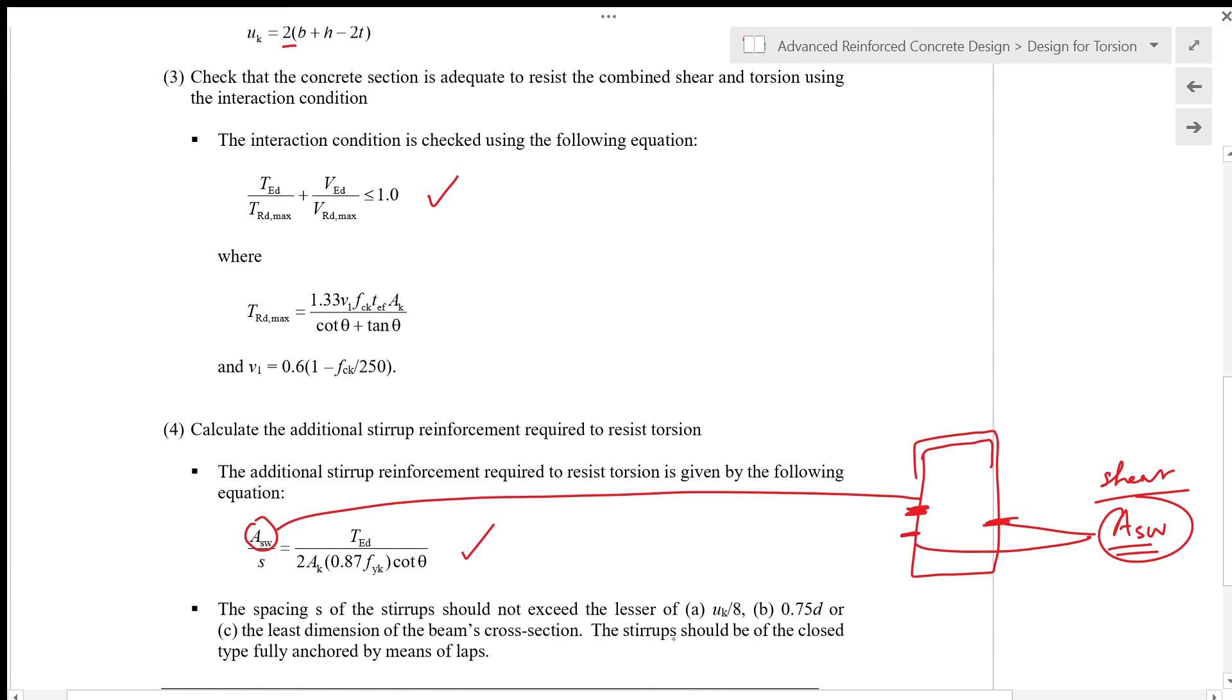The stirrup should be of the closed type fully anchored by means of lap. What this means is that your link must have at least a lap of the smallest dimension of the link, as opposed to normal shear links where we normally have something like this. But in torsion links we need something like this for torsion.